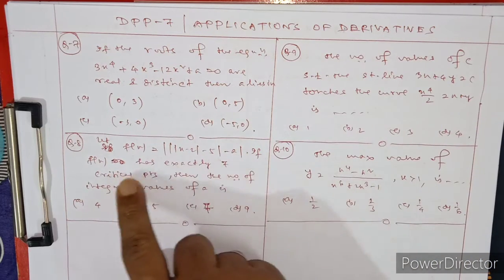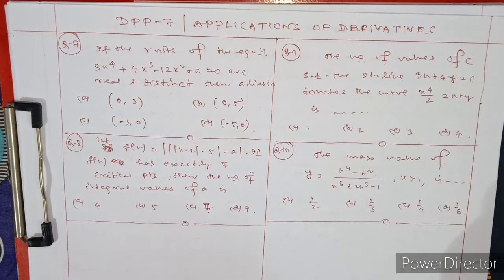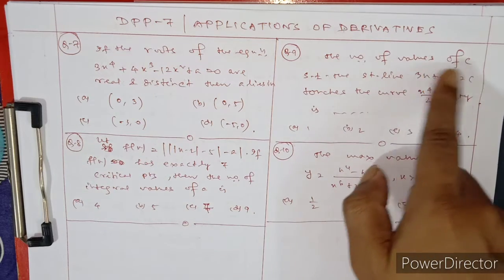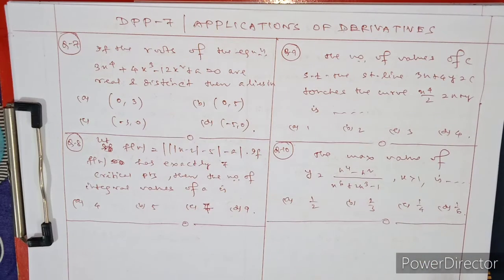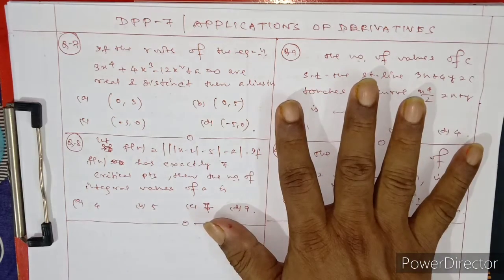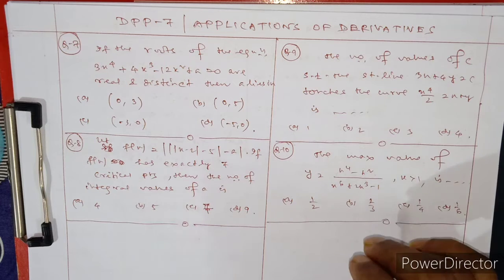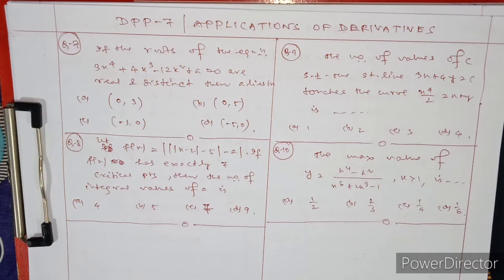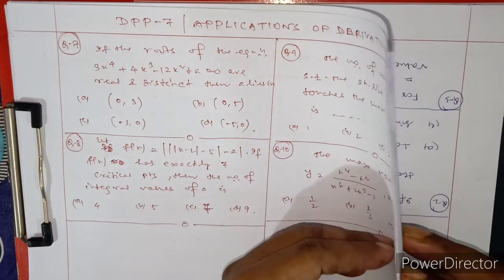If the roots of this equation are real and distinct, then find values of a. Let f(x) equal to this - if f(x) has exactly seven critical points, then find the number of integral values of a. Find the number of values of c such that the straight line touches the curve. Find the maximum value of this.